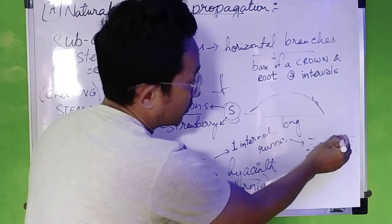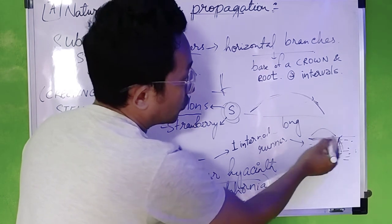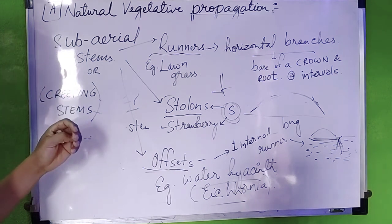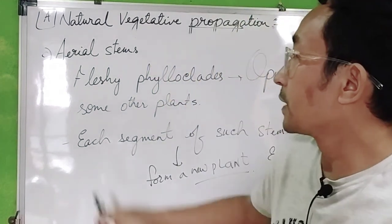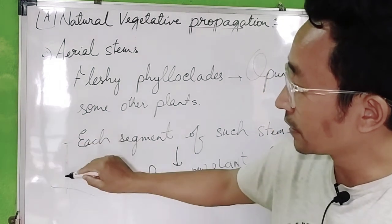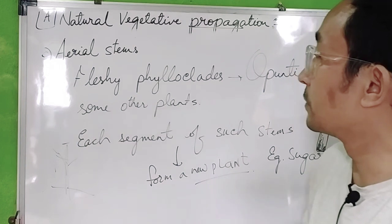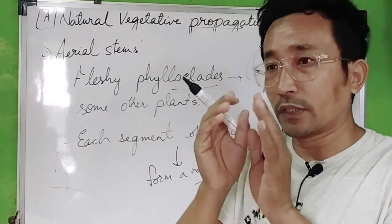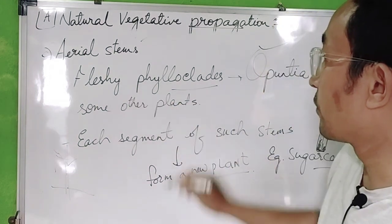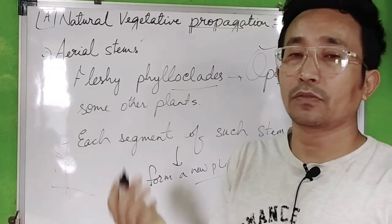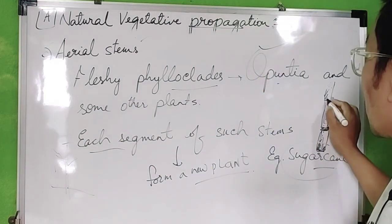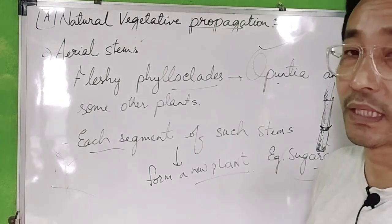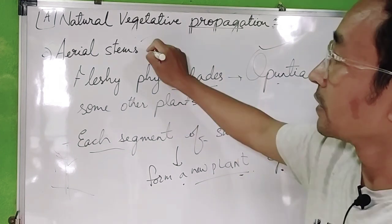This is all about the sub-aerial stems or the creeping stems. It's like a cactus that's flattened — some plants are very flat. And we can use sugar cane: we remove a node, we can use them, and it will give a new plant. For example, sugar cane. This is all about the stems.